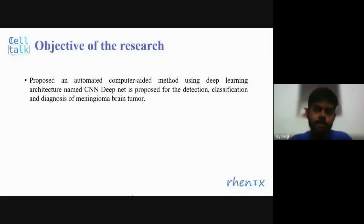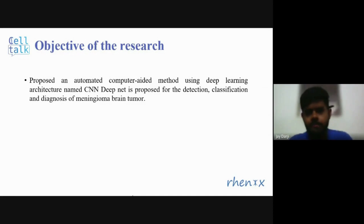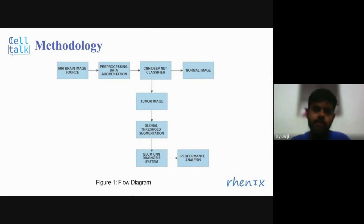The objective of this research is to develop a computer-aided method using deep learning architecture named CNN-DeepNet for the classification and diagnosis of Meningioma brain tumor. This is the flow diagram of our methodology.